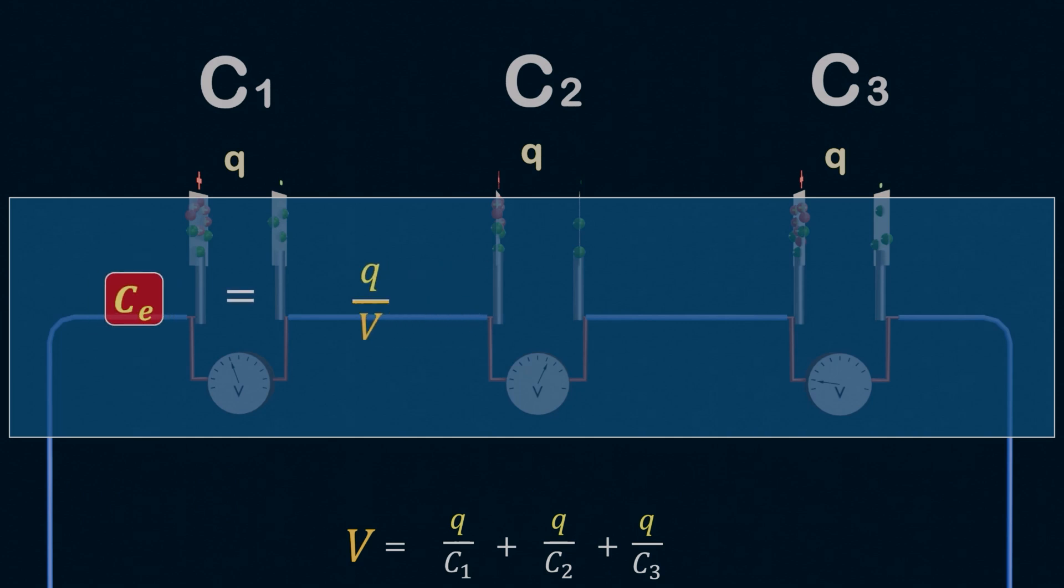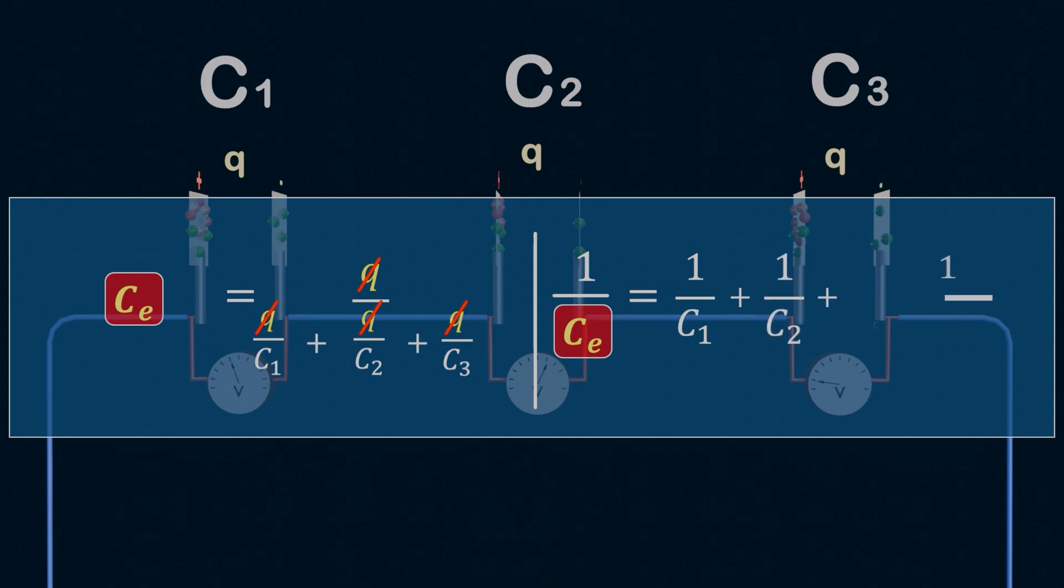Now, in a series connection, the total voltage across the combination is this, which we have just calculated, and charge Q stored in each capacitor is same. Just after simplifying the equation, we will get 1 by CE equals 1 by C1 plus 1 by C2 plus 1 by C3, and so on, to the n number of capacitors, 1 by Cn. This gives us the formula for equivalent capacitance in a series combination.